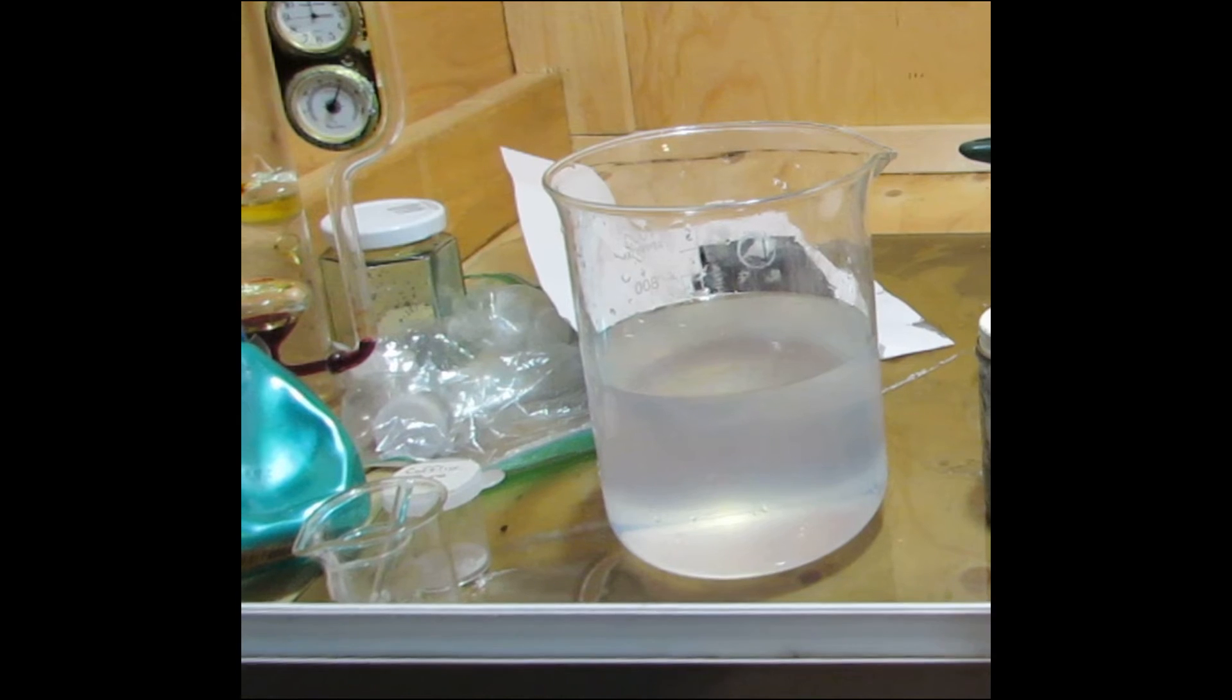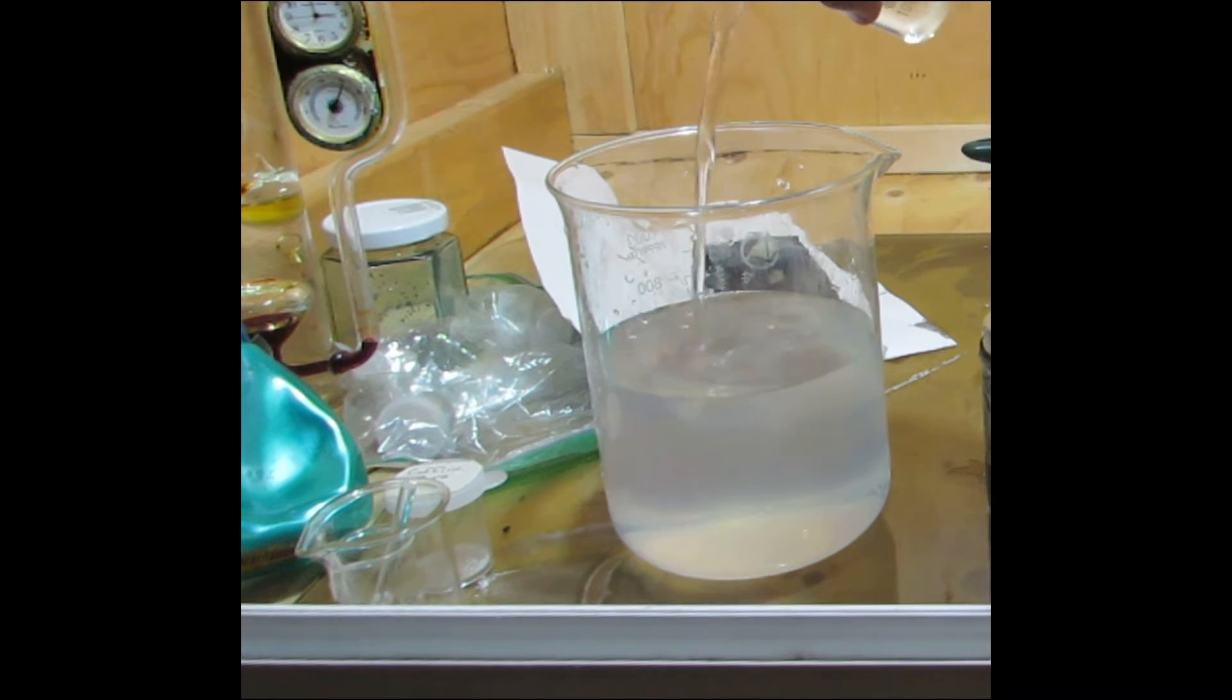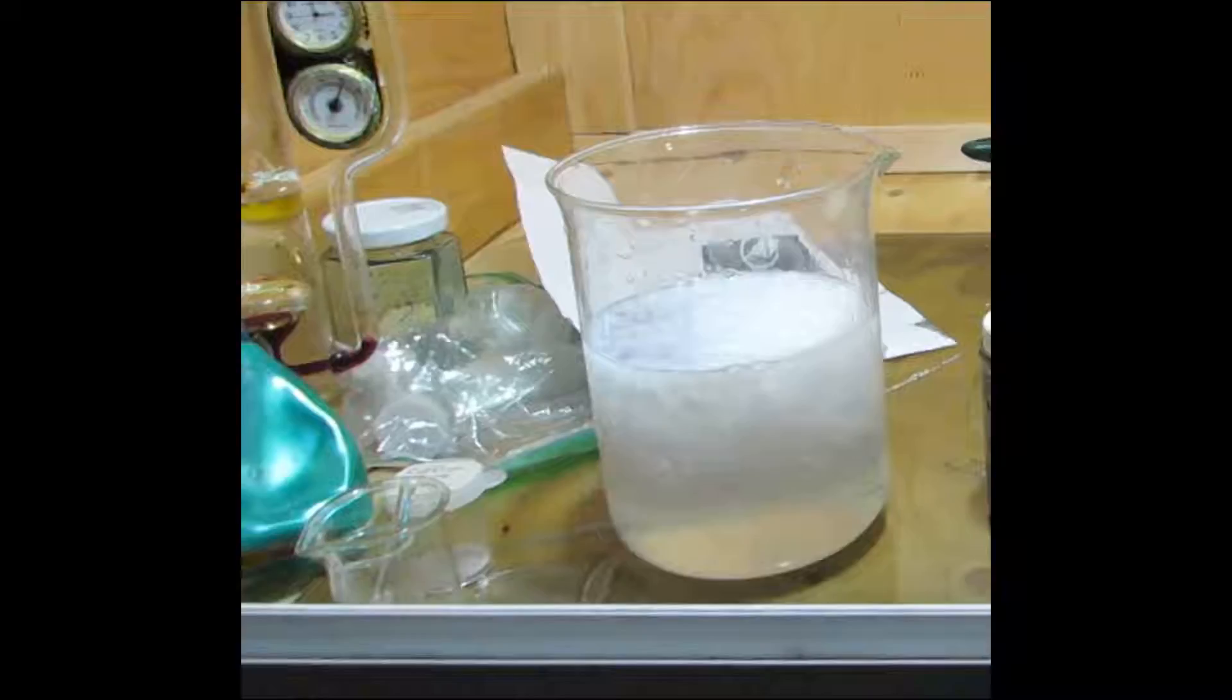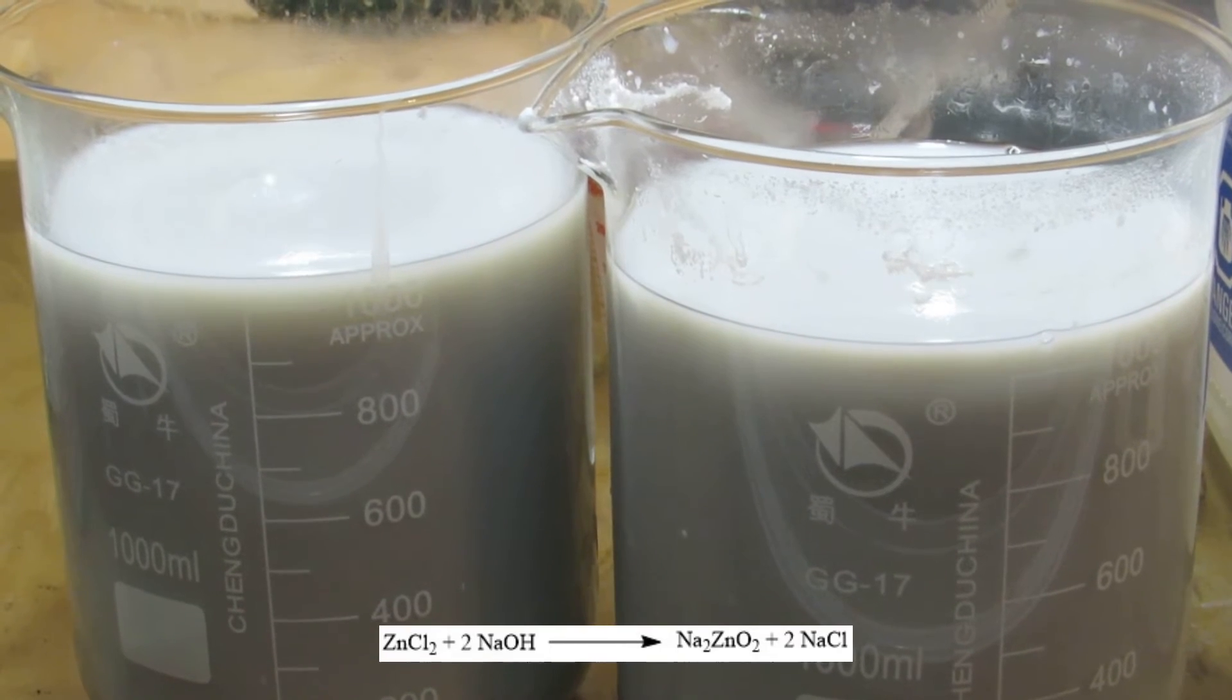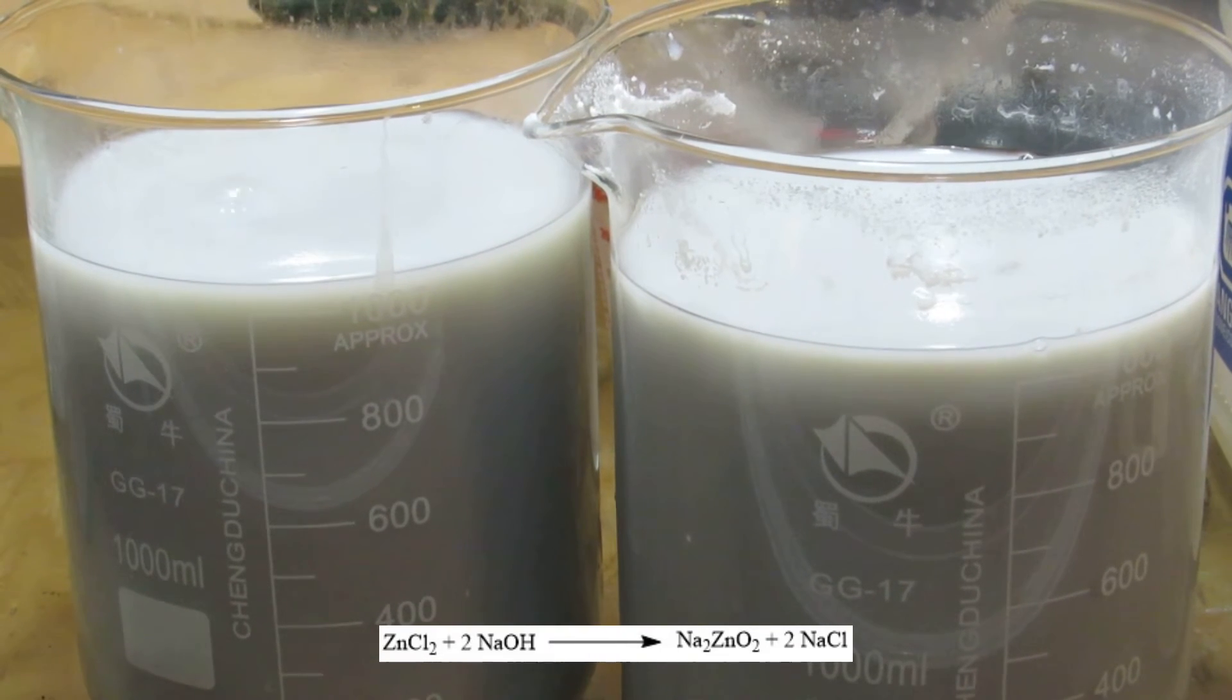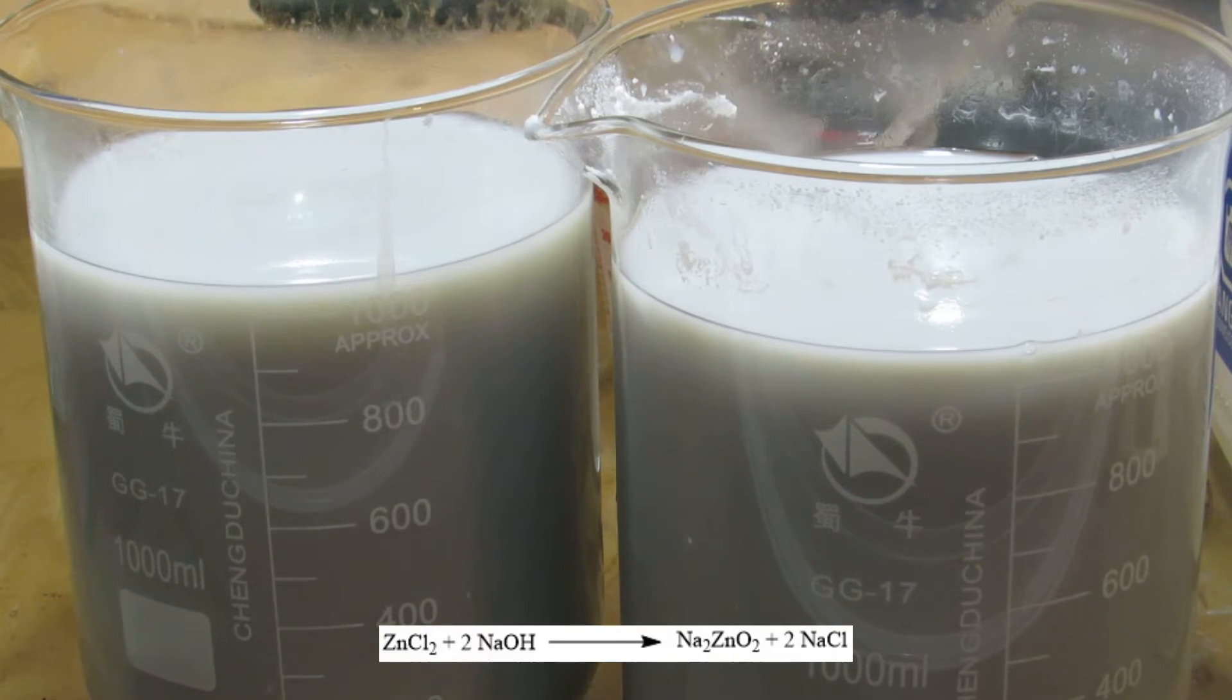Next, 200 grams of sodium hydroxide was added to 1 liter of water, and this was slowly added to the zinc chloride solution. Initially, zinc hydroxide precipitates out, and then additional sodium hydroxide will cause sodium zincate to form, which is water soluble.